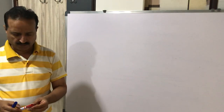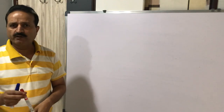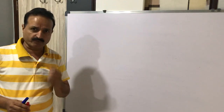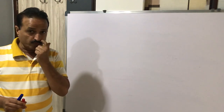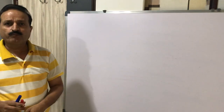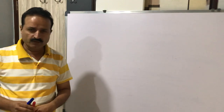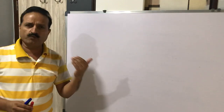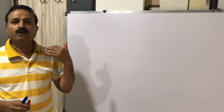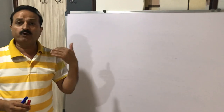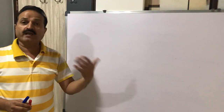In last lecture, we have started a new chapter. The name of the chapter is Aldehyde, Ketone and Carboxylic Acid. We have prepared so many organic compounds from carbonyl or carboxyl functional groups — we have prepared aldehyde, ketone, carboxylic acid, acid chloride, amide, and acid anhydride.